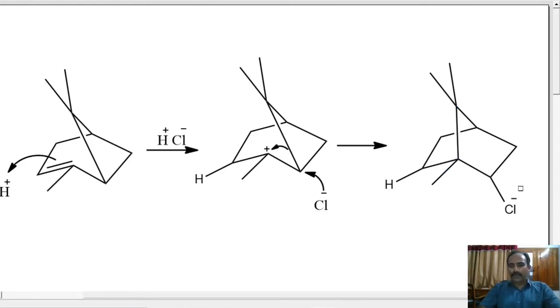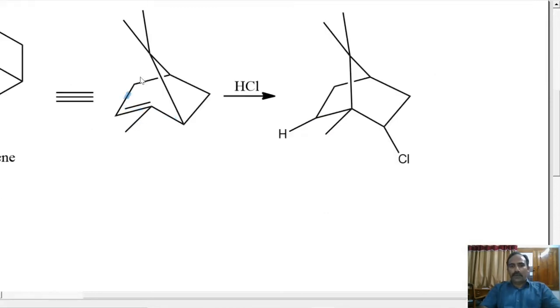The minus charge is also not there. Now, we have got the product. This is Bornyl chloride. So, alpha-pinene on reaction with dry HCl, we get Bornyl chloride.